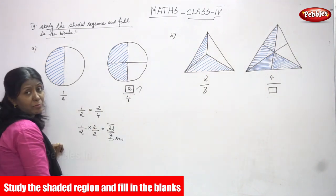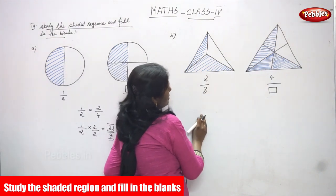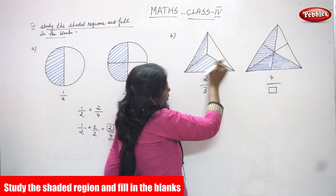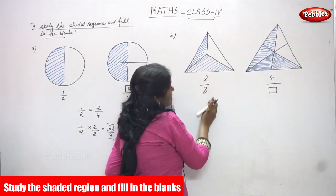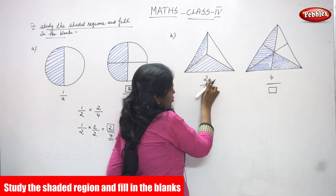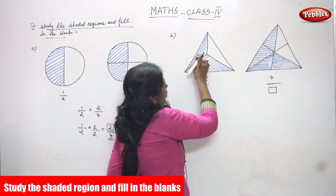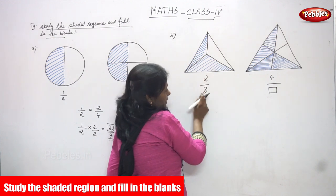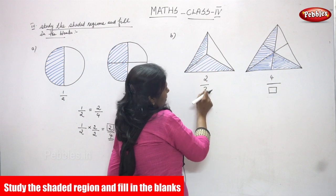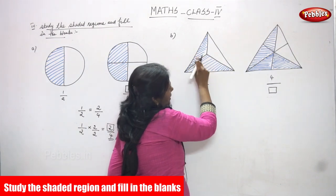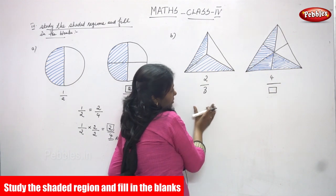The next shape is a triangle — a whole thing. I cut it into three equal parts and shared only two portions. So the fraction is two by three. Look at the parts: one, two, three — those are the equal parts, and I shared only two parts.